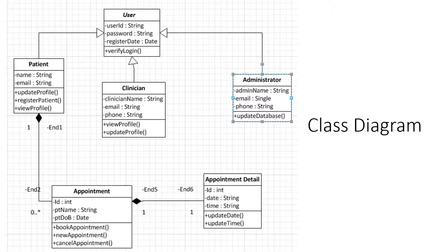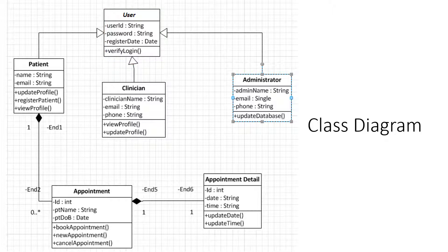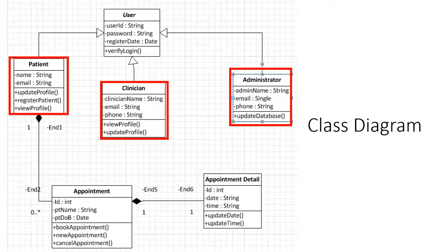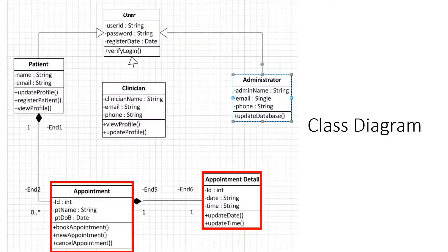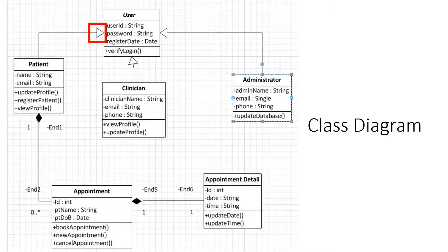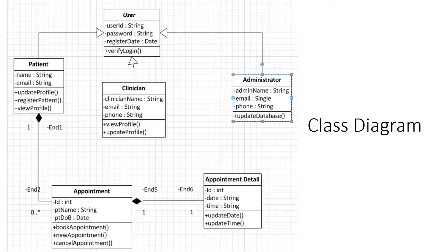My last diagram is a class diagram. Up top you can see the user class with its corresponding attributes and methods. Then we have the subclasses including patient, clinicians, and administrators, all with different attributes and methods. The patient, clinicians, and administrators have hollow triangle arrows pointing towards the user, which signifies that these are subclasses of the user. We also see filled black diamond arrows, which represent a relationship called composition — meaning that if the patient class wasn't there, the appointment class wouldn't exist, and the appointment detail wouldn't exist either. We also have multiplicity, which means that for every one appointment, there is going to be one appointment detail.